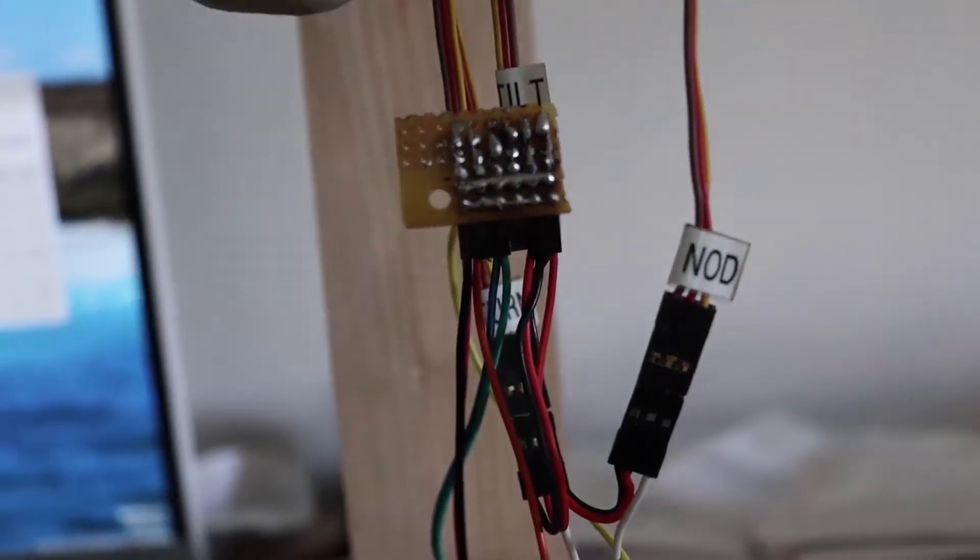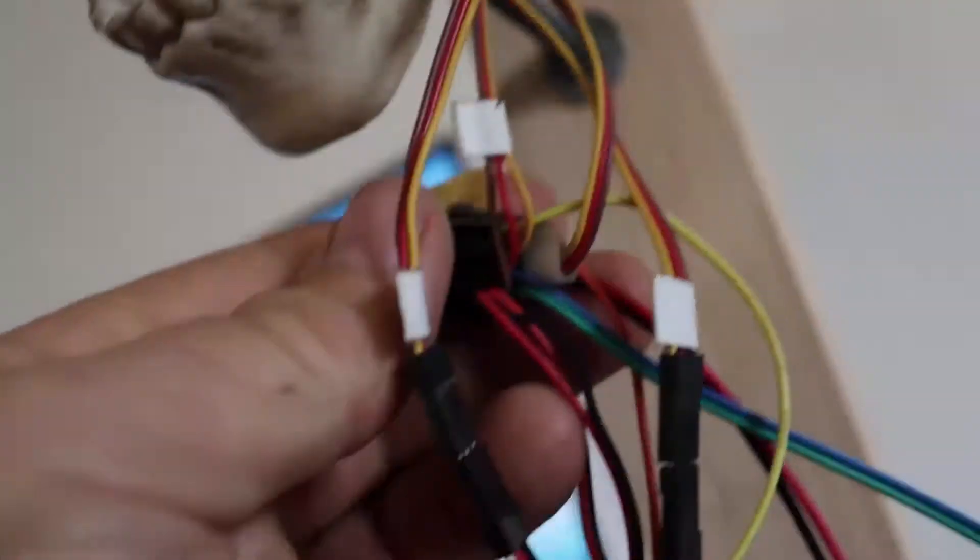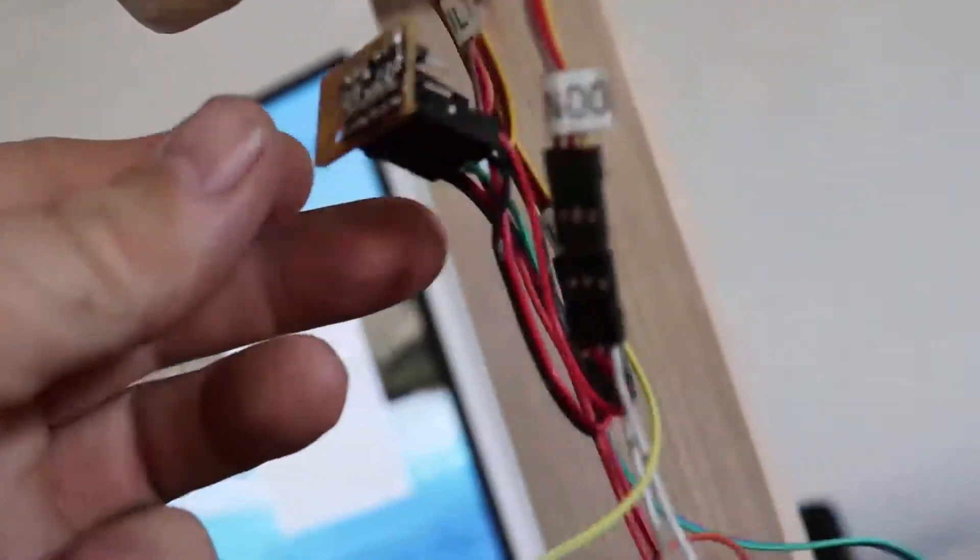Here's the hardware. We've got this little breakout board I just soldered up to get all the servos power and everything. And then this is the Arduino that's running it all, this little Nano. And then of course this is a buck converter, so I'm powering off of a 12 volt LiPo battery.